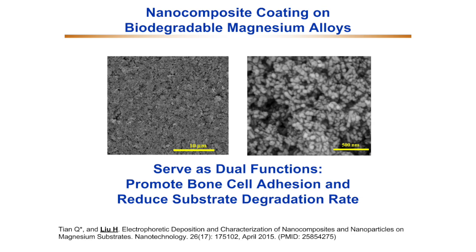Magnesium alloys could provide strength similar to cortical bone, but their degradation rate is faster than required for many medical applications. When we applied the nanocomposite coatings on biodegradable magnesium alloys, we could not only promote bone cell adhesion and long-term functions to promote bone healing, but also reduce the degradation rate of the magnesium alloys to meet the requirements of specific applications.